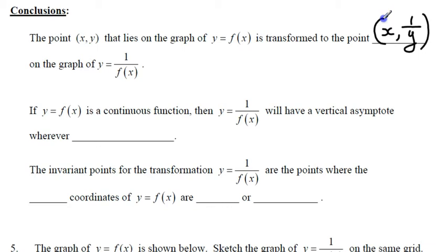If y = f(x) is a continuous function — meaning you could draw it without lifting your pen — then y = 1/f(x) will have a vertical asymptote wherever f(x) is equal to 0. Because you're trying to do 1 over 0, which you can't do, so you get a vertical asymptote.